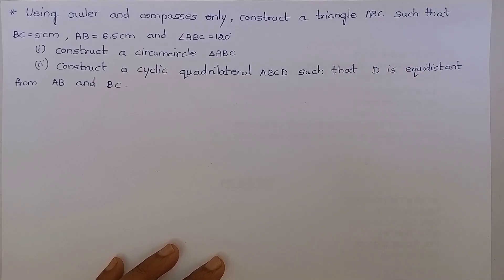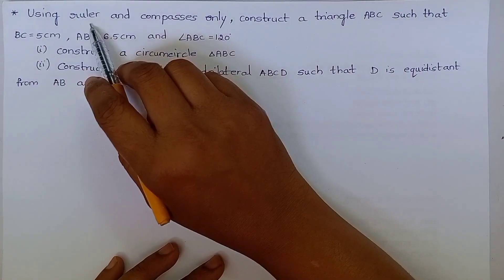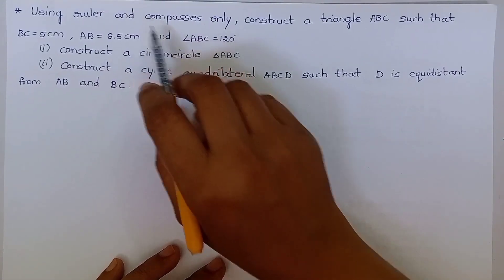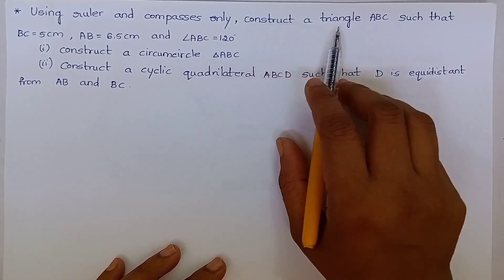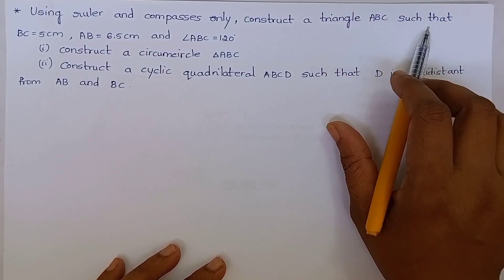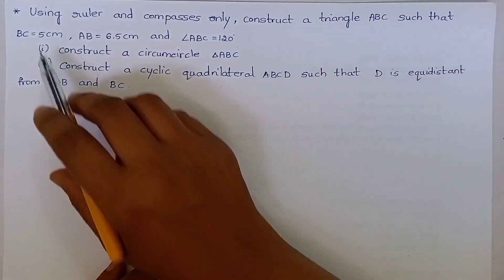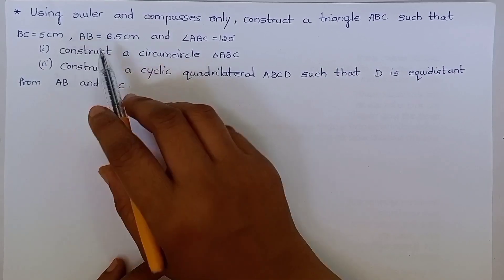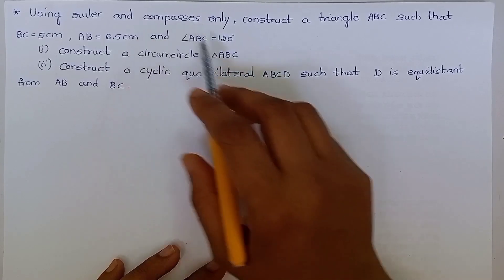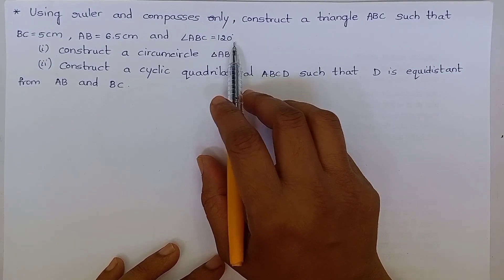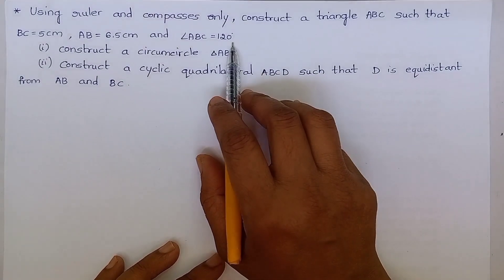Namaste. Welcome to Blishon concept teaching. Let's do the construction using ruler and compass only. Construct a triangle ABC such that BC is equal to 5 cm, AB is equal to 6.5 cm, and angle ABC is equal to 120 degrees.